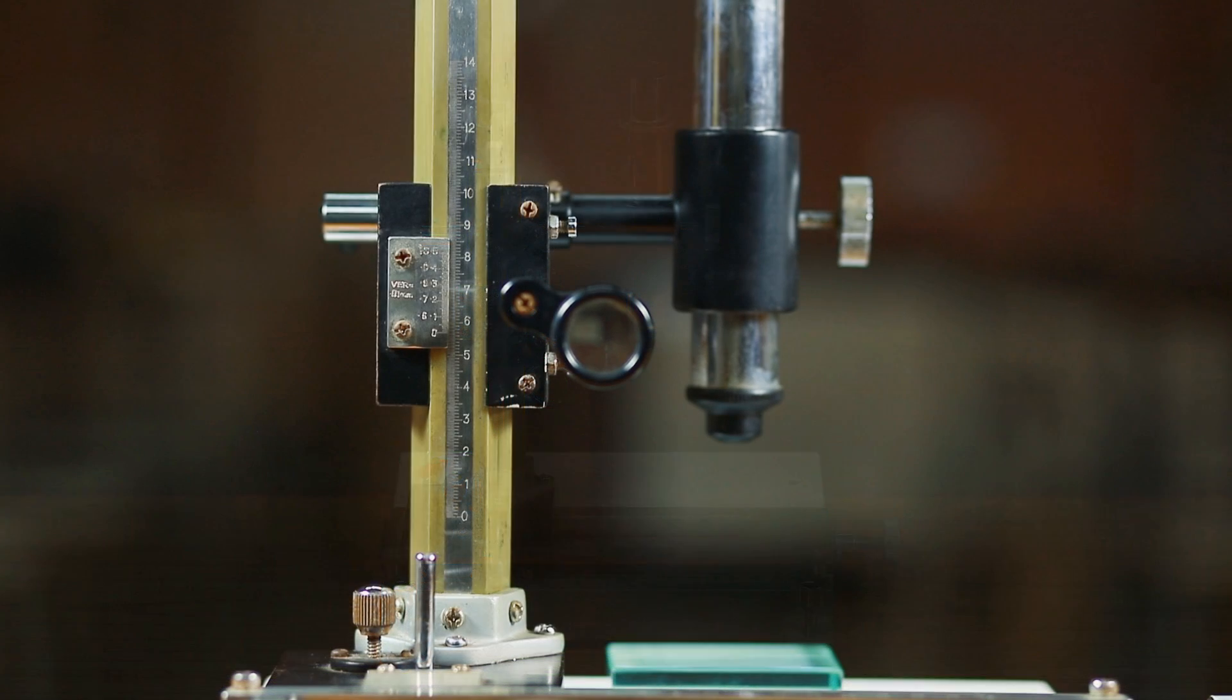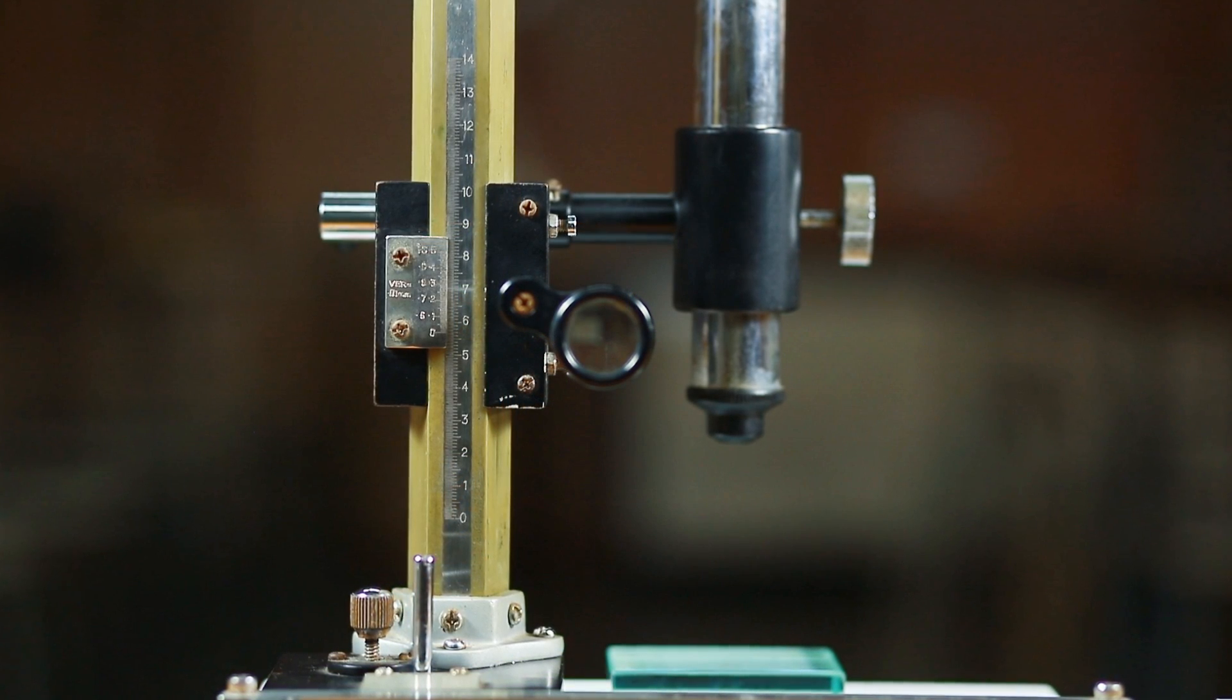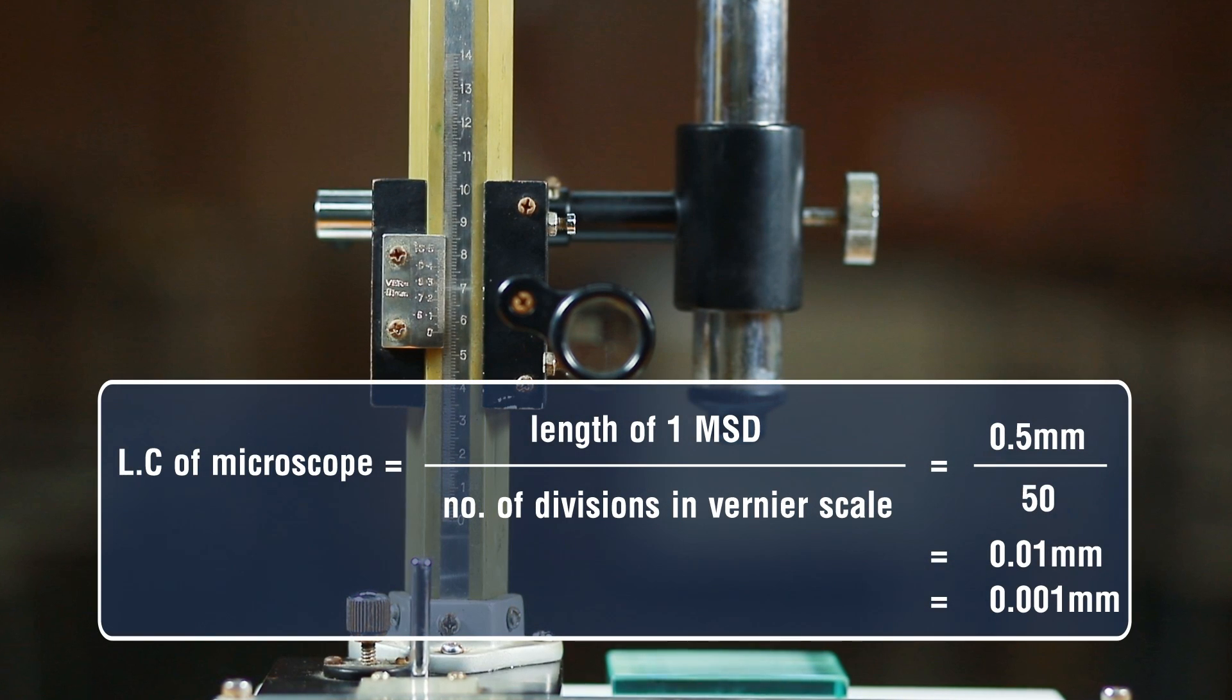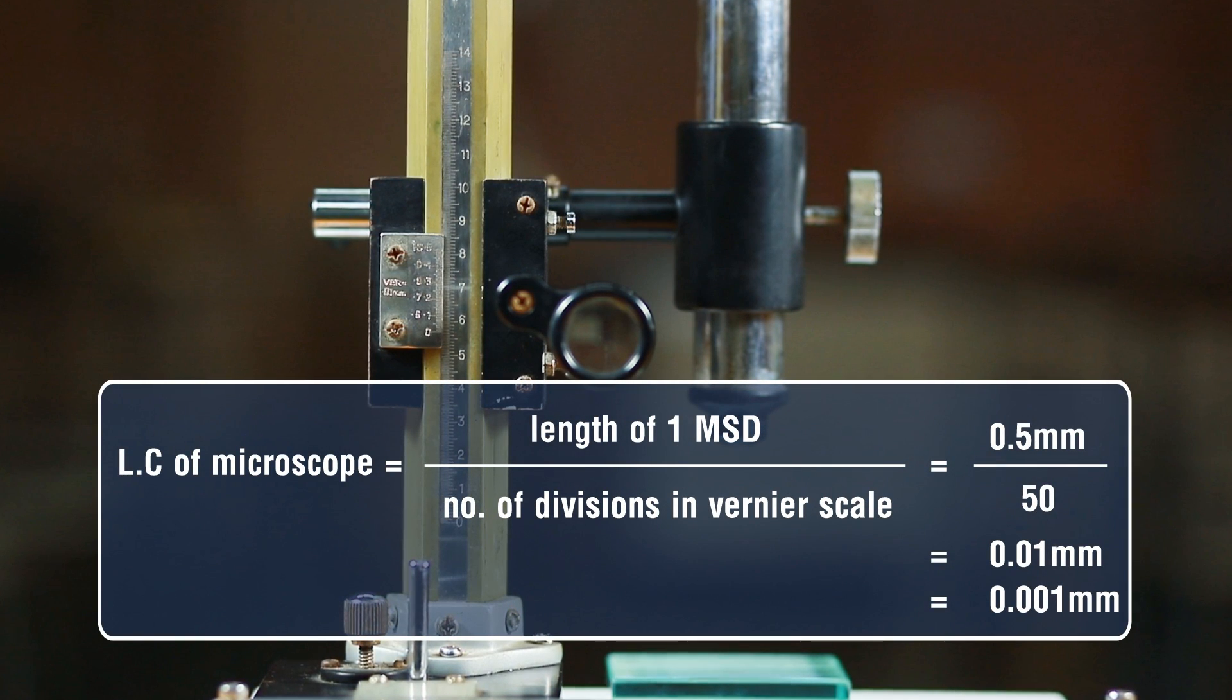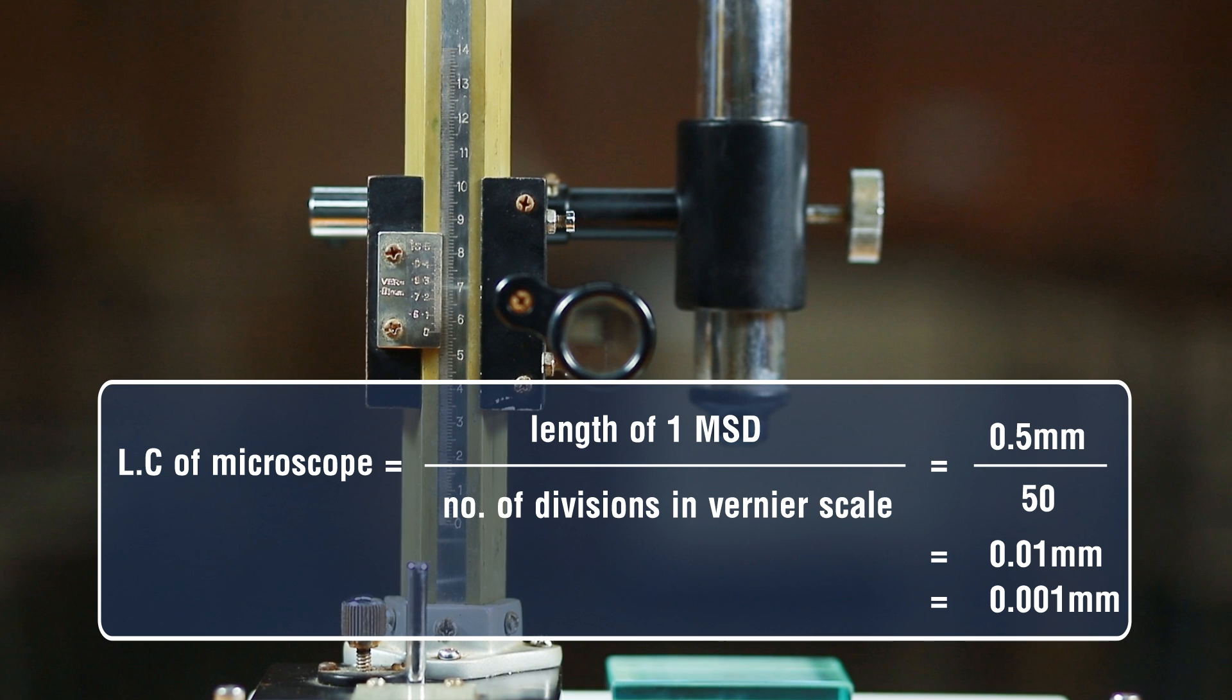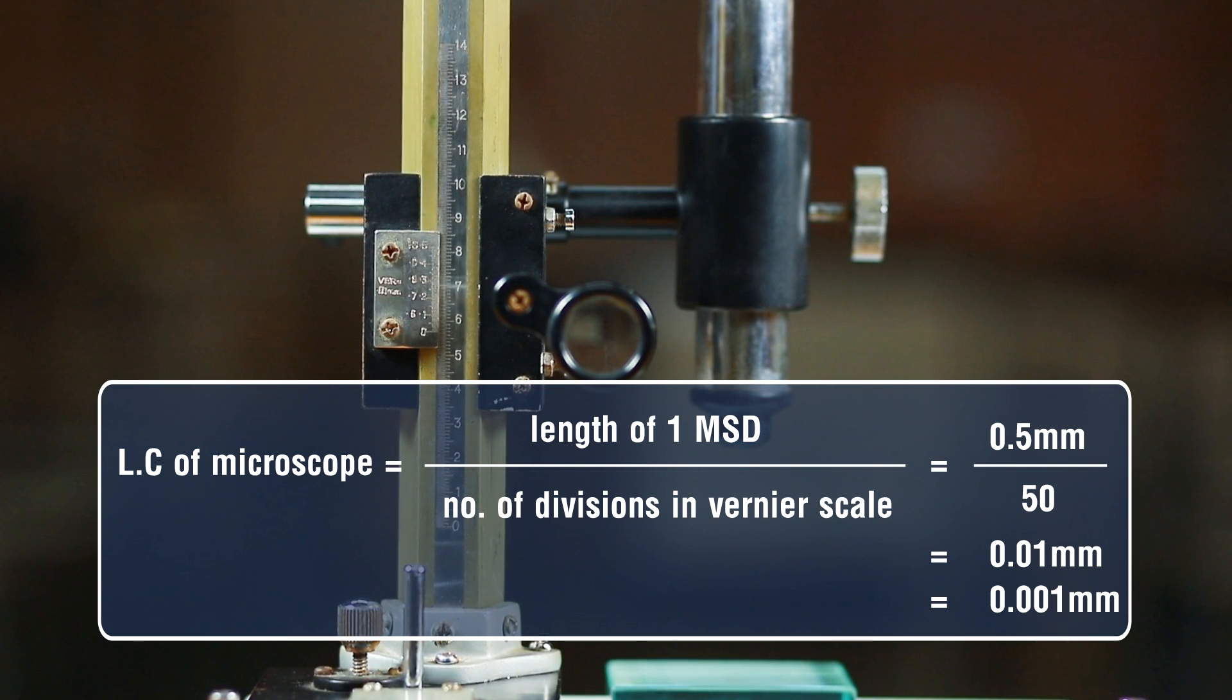First, find the least count of the travelling microscope. The least count of microscope is the ratio of length of one main scale division to the number of division on the vernier scale.